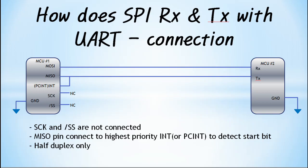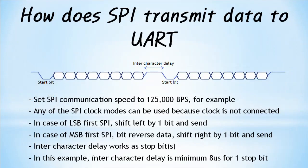SCK and SS of SPI are not used and should not be connected. Use the highest priority INT or PCINT available to detect the start bit input to MISO. Communication with UART using SPI only supports half duplex. Any SPI clock mode may be used. If MSB first SPI is used, transmit by bitwise reversing the data and writing it to the SPI transmit data register with a 1-bit shift write. If LSB first SPI is used, the data is shifted by 1 bit and written to the SPI transmit data register.